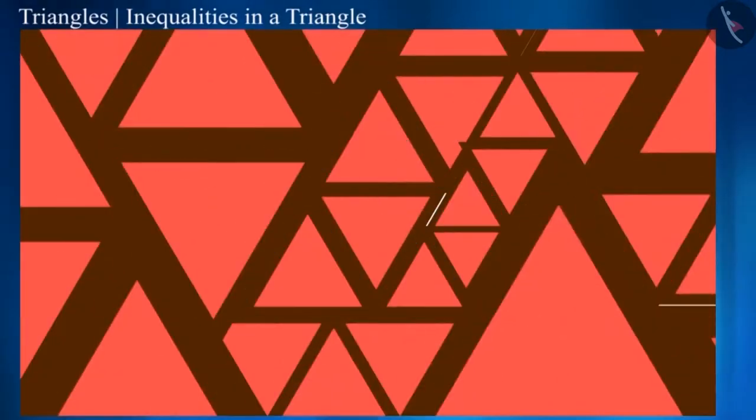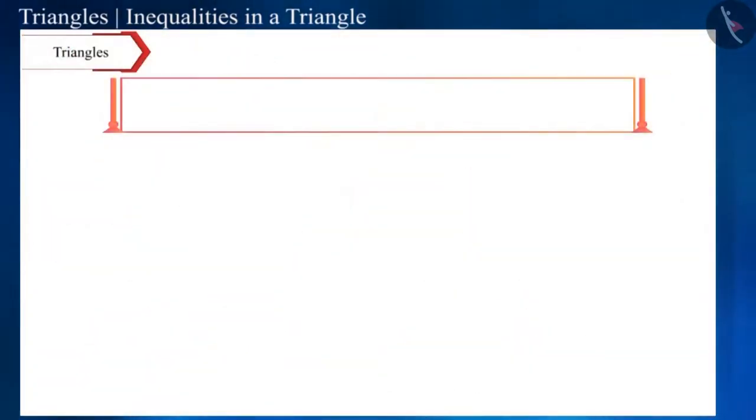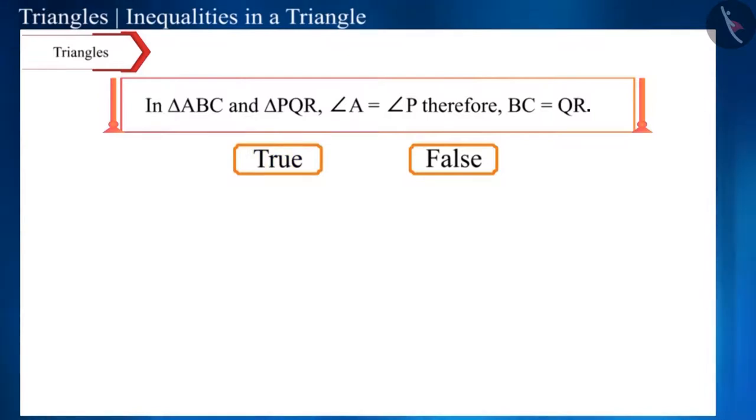Let's take the next question. In triangle ABC and triangle PQR, angle A is equal to angle P. So, the opposite side, side BC of angle A will be equal to the opposite side, side QR of angle P. Is this statement true?